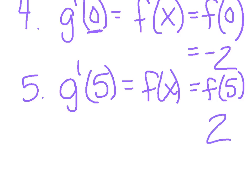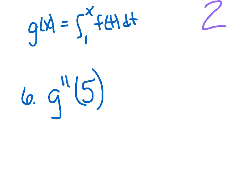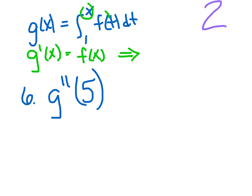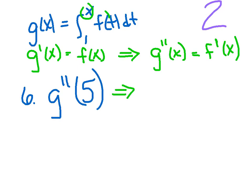Number 6: g double prime of 5 — I have to take two derivatives. From the second fundamental, g prime of x equals f of x. Taking the derivative one more time gives g double prime of x equals f prime of x. So g double prime of 5 implies the same thing as f prime of 5 — instead of looking at the value of f at 5, I want its derivative, or slope, at 5.